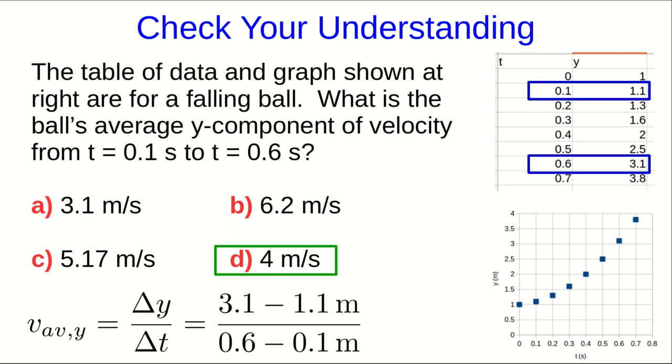Probably the most common error would be to not do delta y over delta t, but instead to do y over t. So that would just be 3.1 meters over 0.6 seconds, and that gives you the incorrect value of 5.17 meters per second.